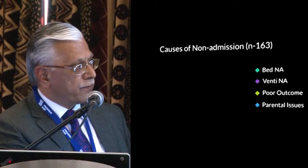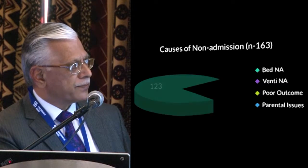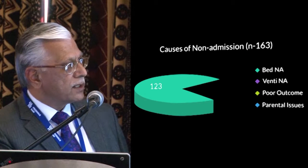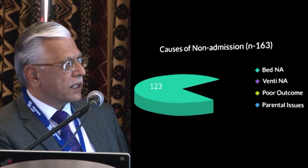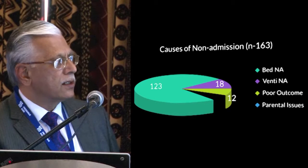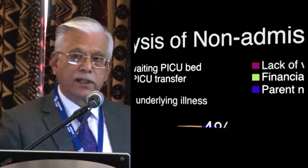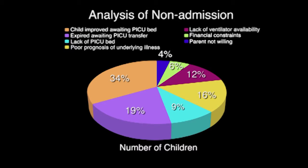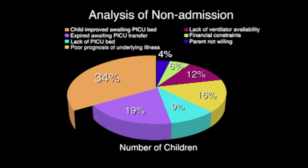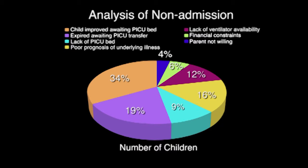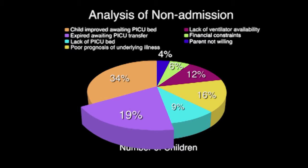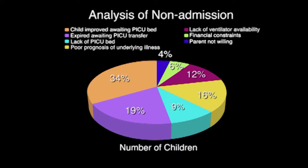This is data from four years ago: out of 163 requests, 123 were cases where no bed was available. There is also a significant number where financial or parental reasons were the cause for non-admission. In the more recent data, not much has changed, although bed availability has increased. Only one-third of patients are now not coming in because of bed unavailability, but a large number still die before a bed is made available.